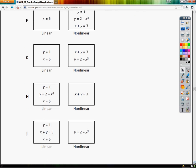And the last one, y is equal to 1, x plus y equals 3, x equals 6, are linear, all those are linear. And y is equal to 2 minus x to the third power is nonlinear, and that's true. So the answer to this question is J.